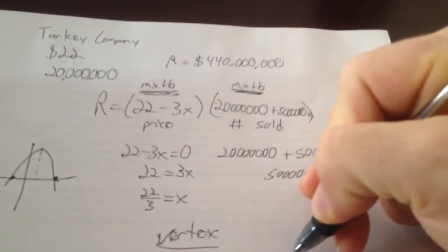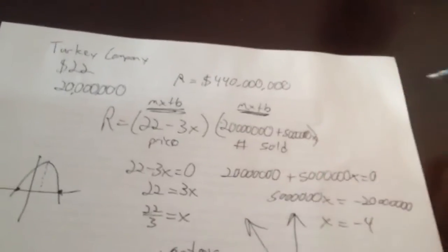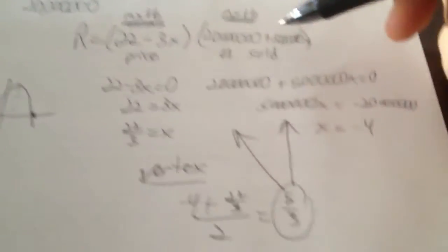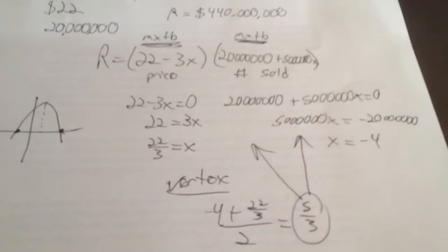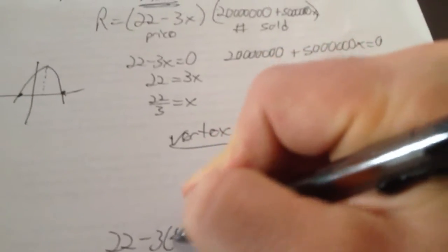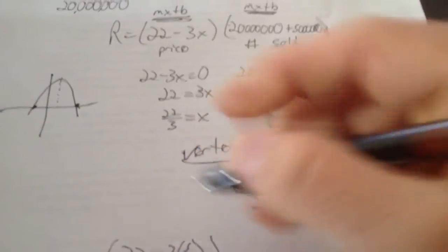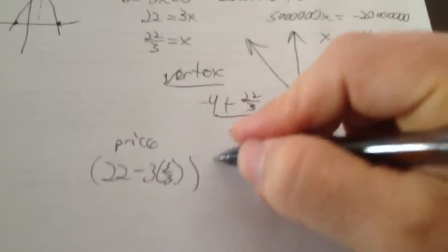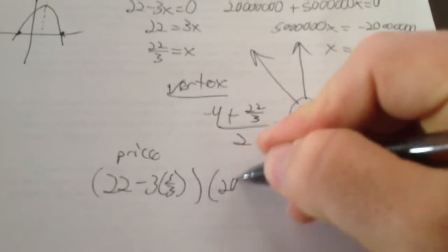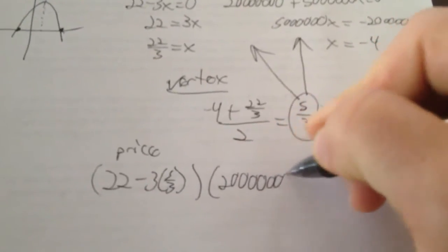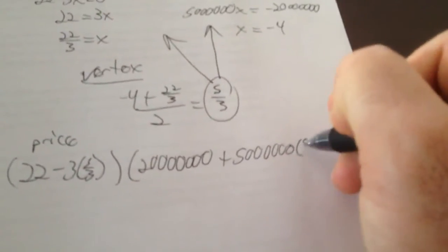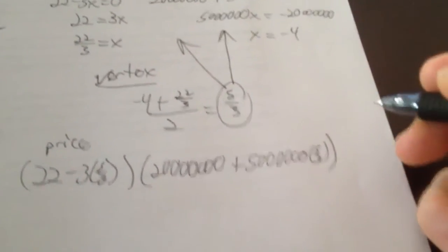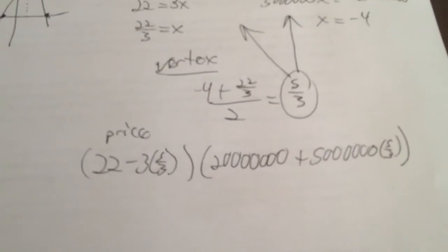But that's not the answer to the problem. Don't forget to take this guy right here and plug him in up at the top of this equation for the X into the revenue function. So 22 minus 3 times 5 thirds is going to give me the price. Remember, this is the price parentheses. And then 20 million plus 5 million times X, or 5 over 3, for my vertex, will tell me how many people I sell turkeys to.